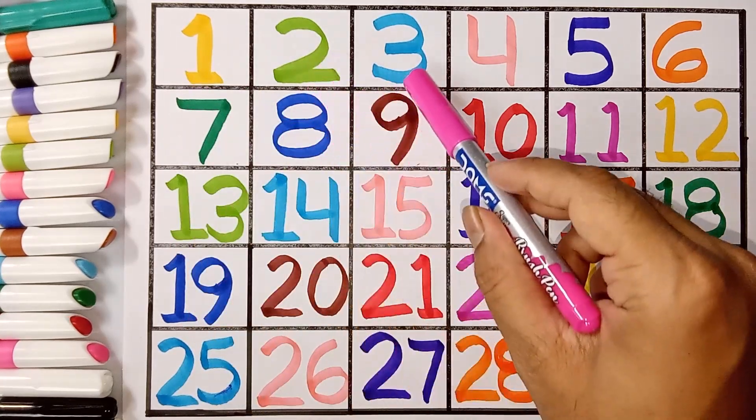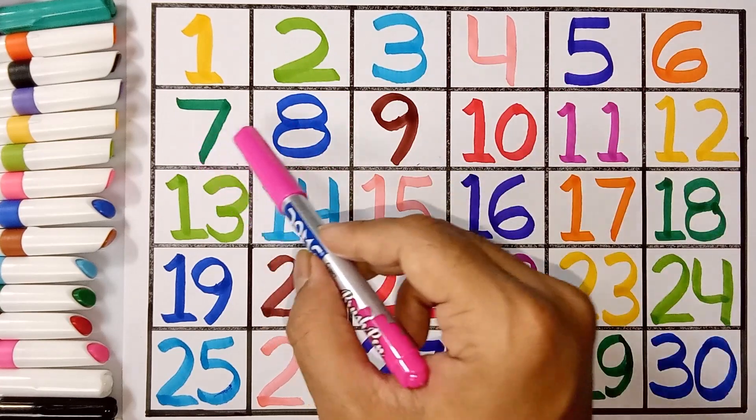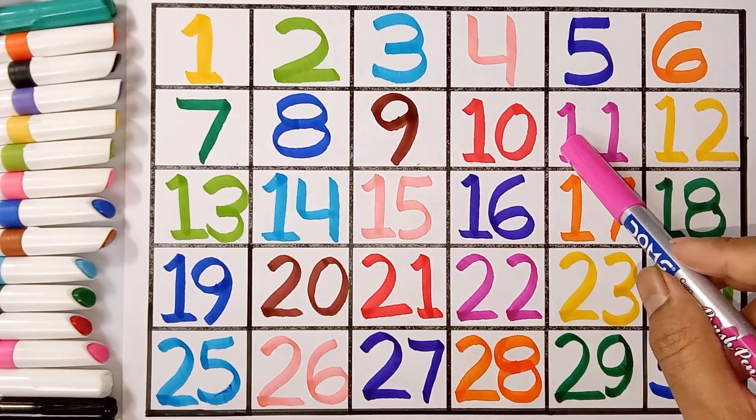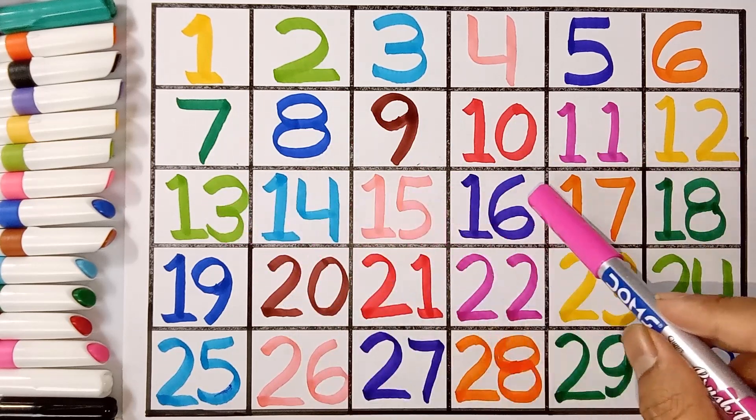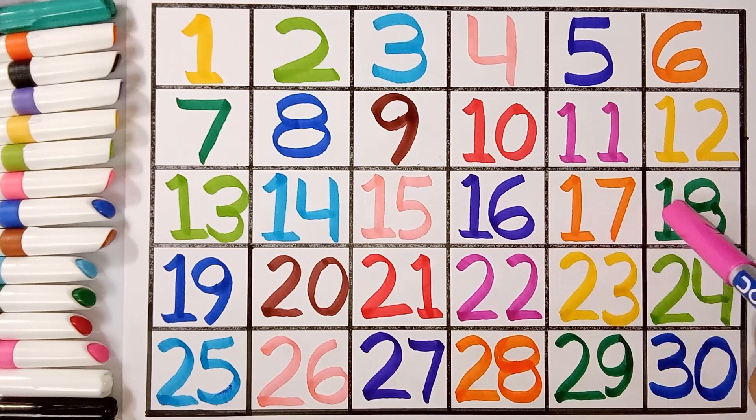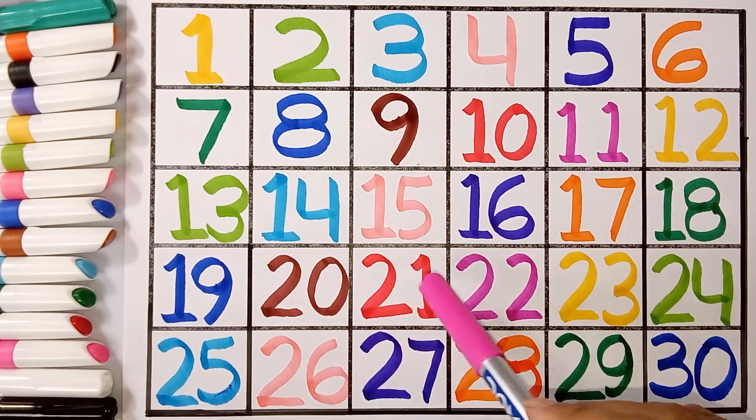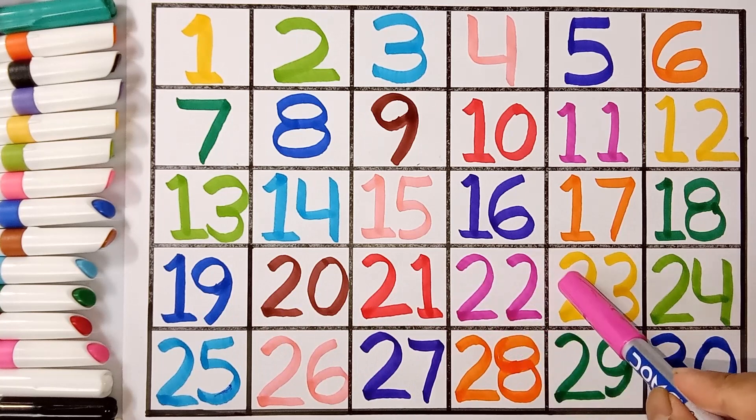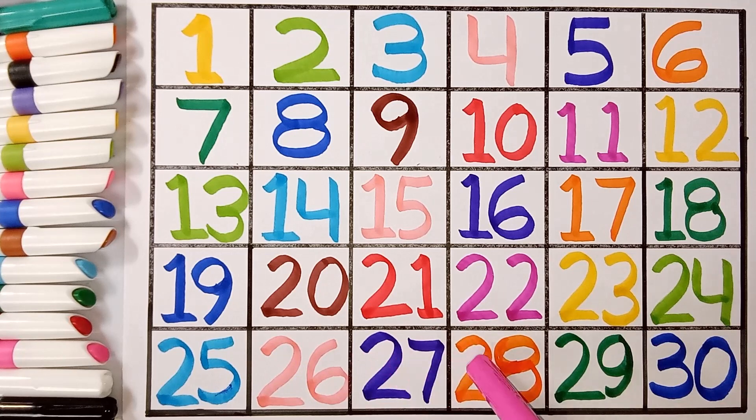Thirty-two, thirty-three, thirty-four, thirty-five, thirty-six, thirty-seven, thirty-eight, thirty-nine, ten, eleven, twelve, thirteen, fourteen, fifteen, sixteen, seventeen, eighteen, nineteen, twenty, twenty-one, twenty-two, twenty-three, twenty-four, twenty-five, twenty-six, twenty-seven, twenty-eight, twenty-nine, thirty.